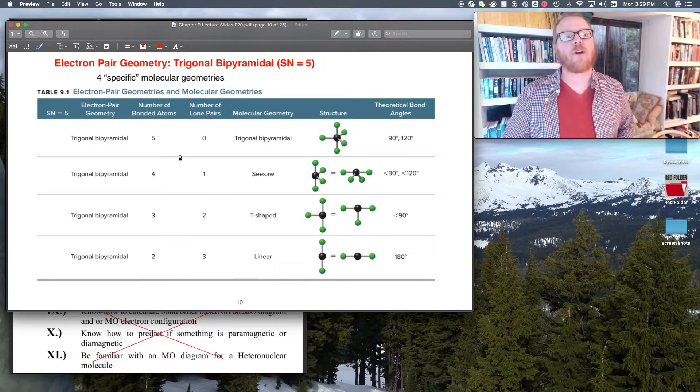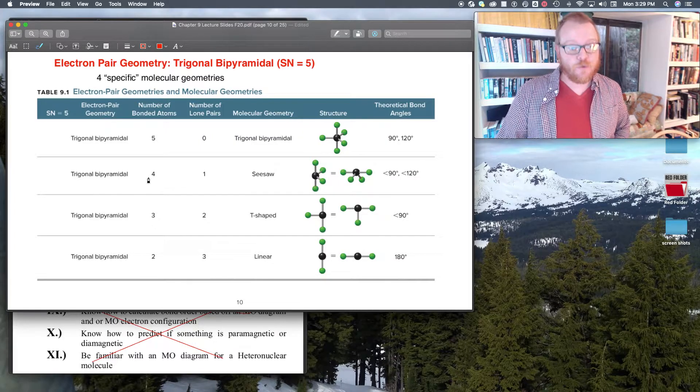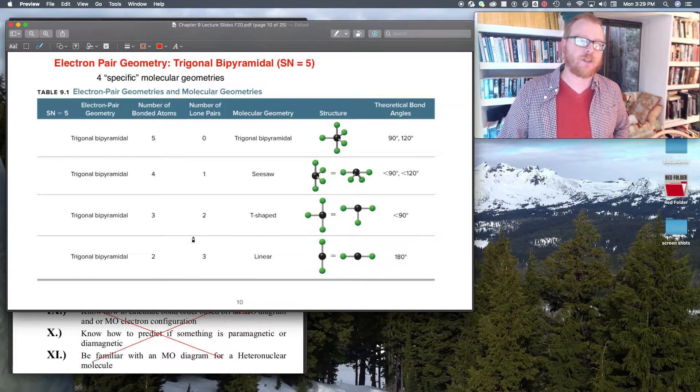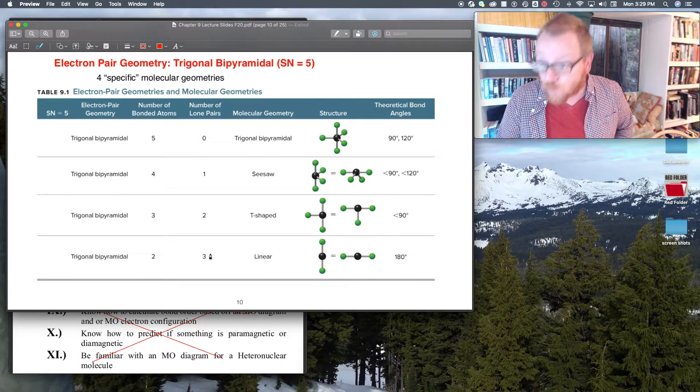And those come from five atoms and zero lone pairs, four atoms and one lone pair, three atoms and two lone pairs, two atoms and three lone pairs.